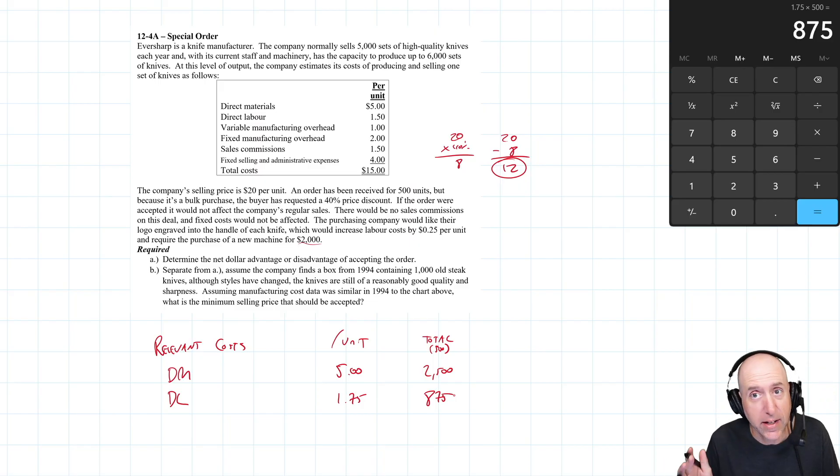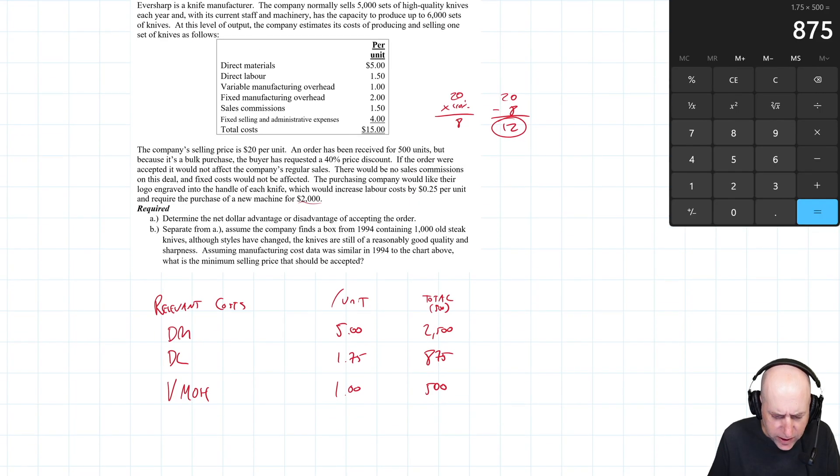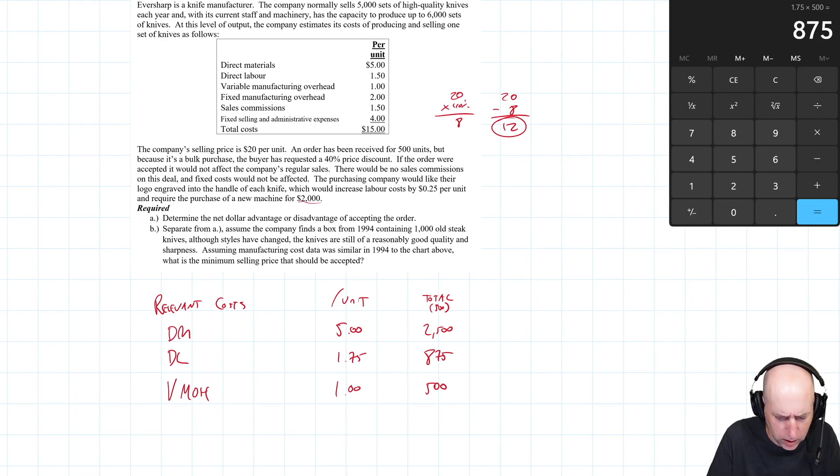Variable overhead, variable costs tend to be relevant. The more units you make, the more the variable costs are. The less units you make, the less variable costs are. So if more knives means more variable costs, well, we're making more knives, we're going to have more variable costs. It didn't say anything about variable overhead either. So a dollar, that's 500 in total. Fixed overhead, not relevant. Don't use it. And why is that? It says there would be no sales commissions on this deal and fixed costs would not be affected. So fixed costs are not affected. There's no sales commissions and fixed costs would not be affected. So all three of those just not relevant.